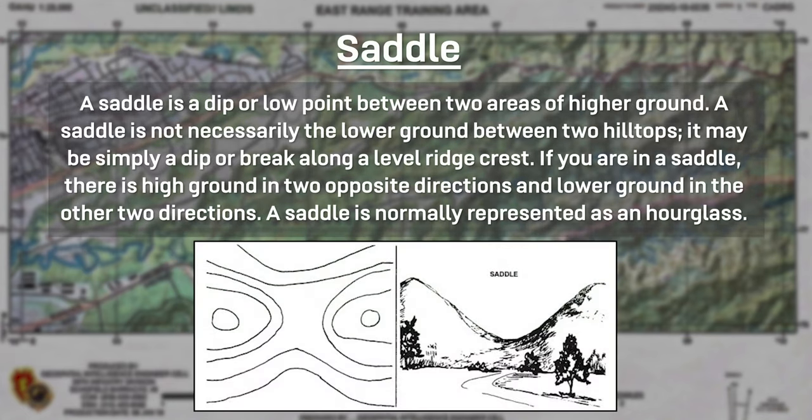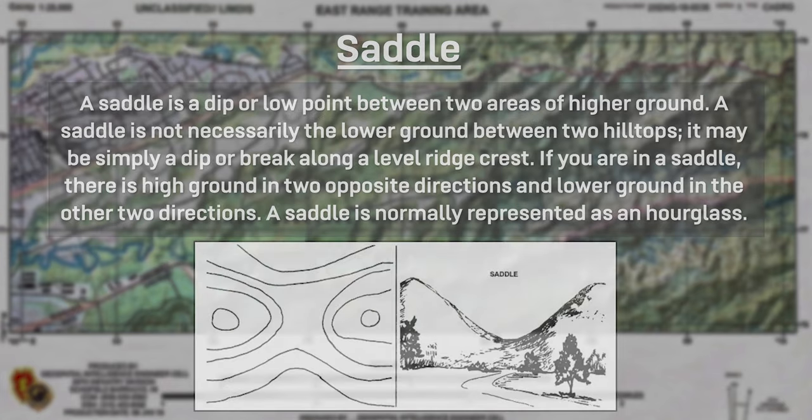A saddle is a dip or low point between two areas of higher ground. A saddle is not necessarily the lower ground between two hilltops — it may simply be a dip or break along a level ridge crest. If you are in a saddle there is high ground in two opposite directions and lower ground in the other two directions. The saddle is normally represented as an hourglass on the map.